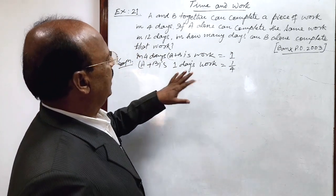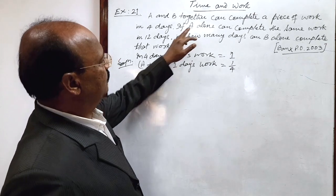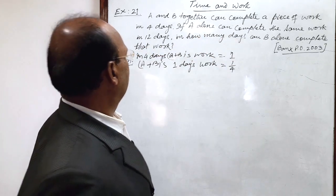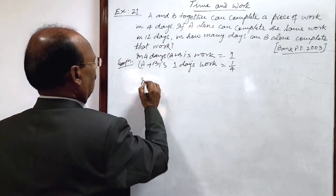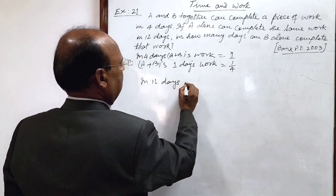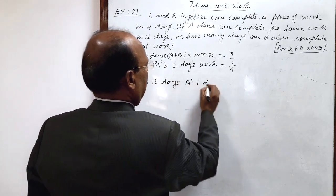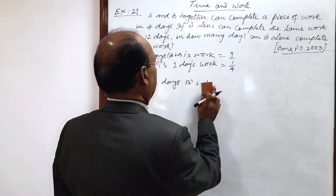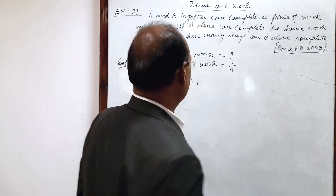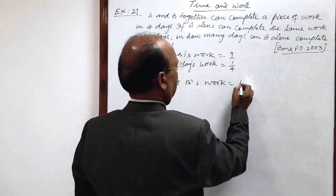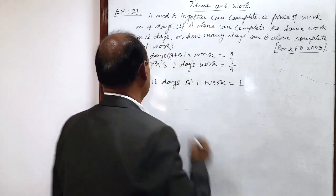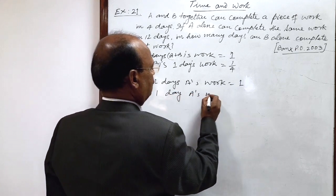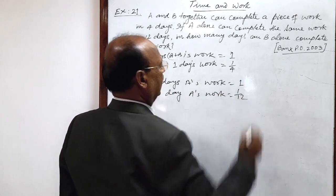Similarly, we can find out one day's work of A. A alone can complete the same work in 12 days. So in 12 days work done by A, in 12 days A's work is one, one complete work. Therefore, in one day A's work will be how much? By unity method one by twelve.